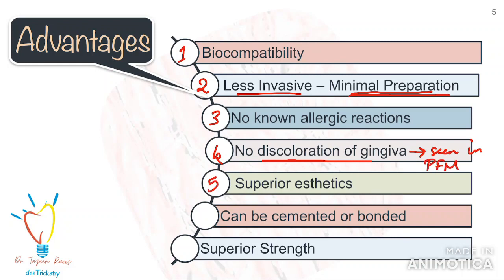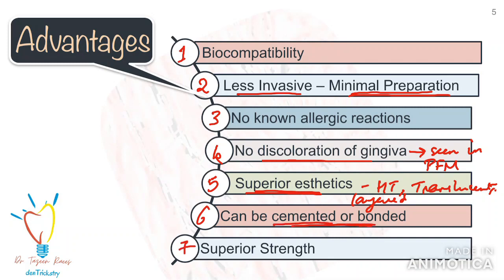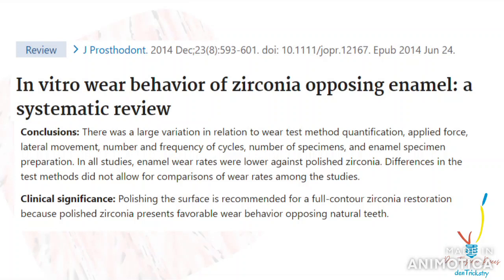Another advantage of zirconia crowns is great aesthetics, especially the translucent, high-translucent, and veneered ones. They are metal-free and therefore have better light reflection properties, which improves their aesthetic quality. They can also be used to mask discolored teeth. Zirconia has superior strength. A very big advantage is that zirconia restorations can be cemented conventionally or, if the case dictates, they can even be bonded to the tooth. They are also wear-friendly.